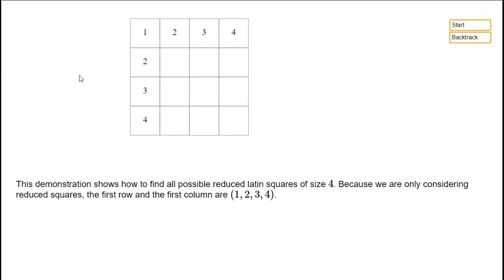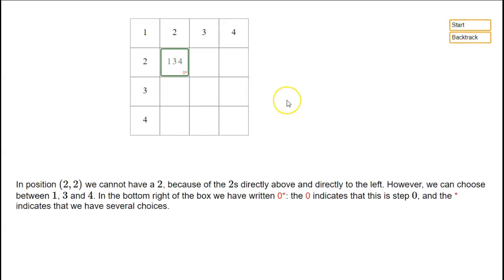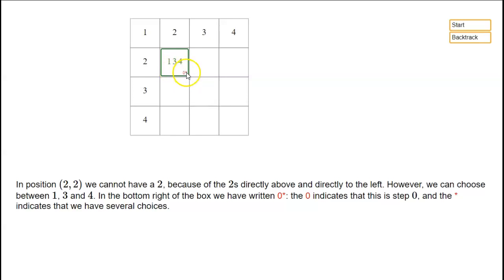So we're going to start off with this 1, 2, 3, 4, 1, 2, 3, 4 that we have to have. And then we're going to start trying to fill in the other 9 squares. We can't put a 2 here because there's already a 2 there and a 2 there, but we could put a 1 or a 3 or a 4. So because we've got choices, we put a little 0 here to indicate this is step 0 where we're starting, and a star to remind ourselves that we actually have a choice here.